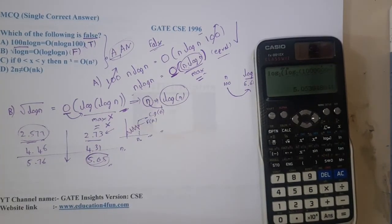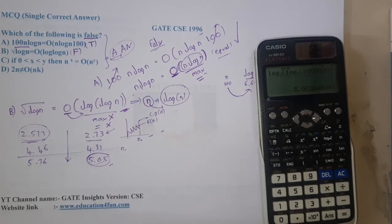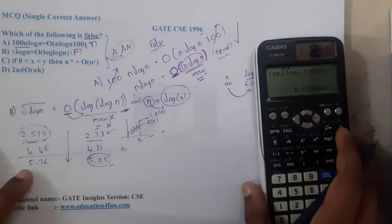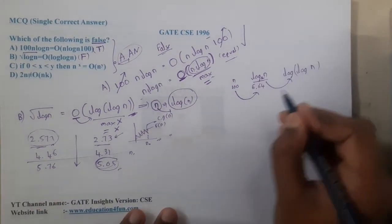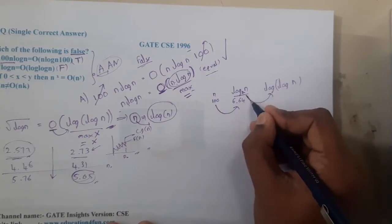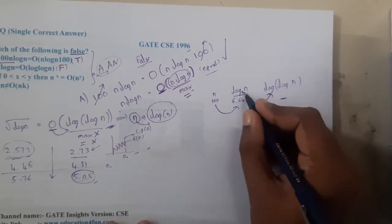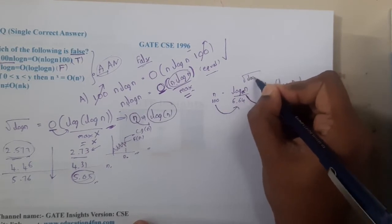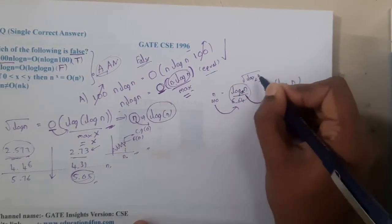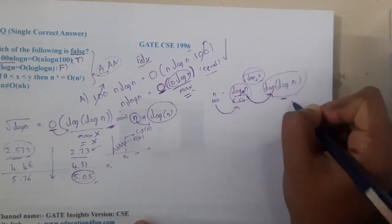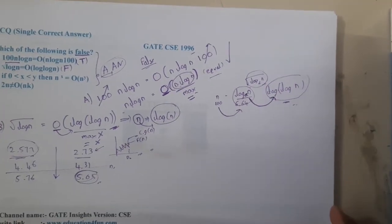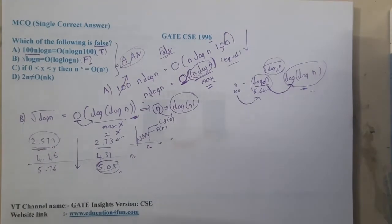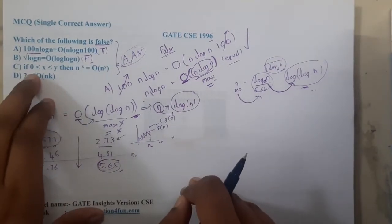In an exam you don't need to check each value individually. The trick to remember is: log n > √(log n) > log(log n). So √(log n) is less than log n but greater than log(log n). By this, option B is wrong.